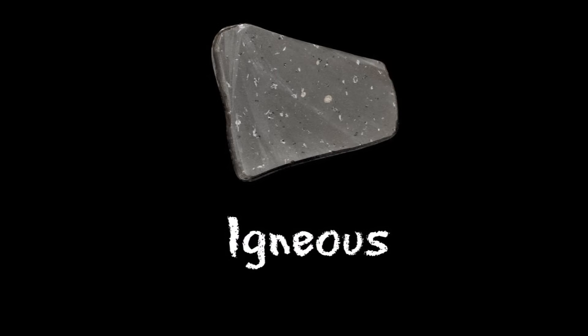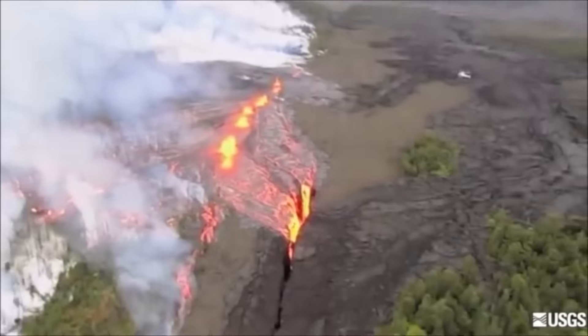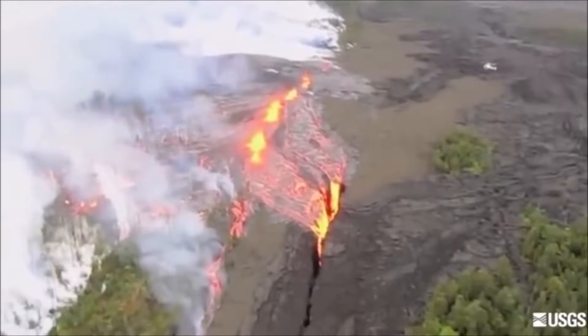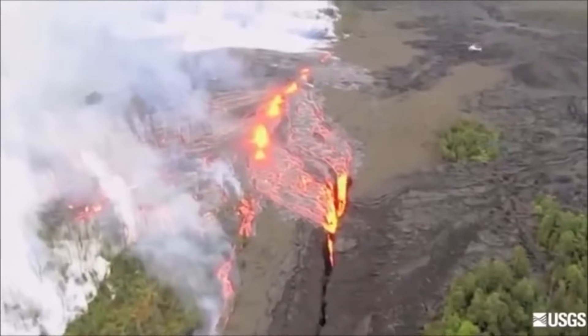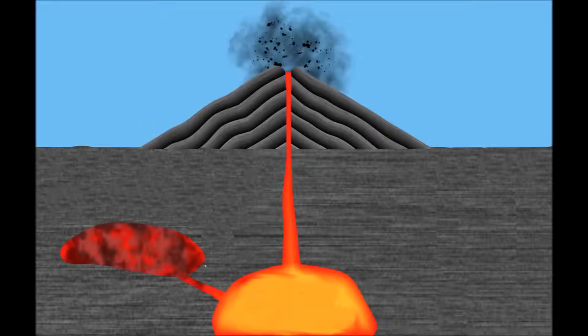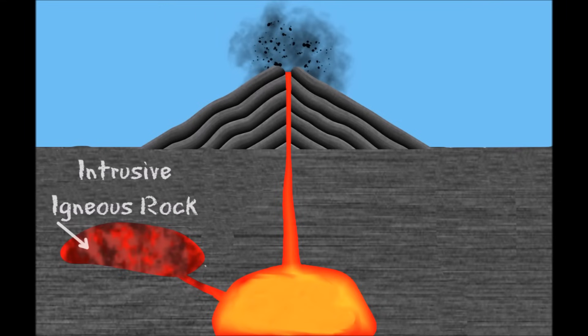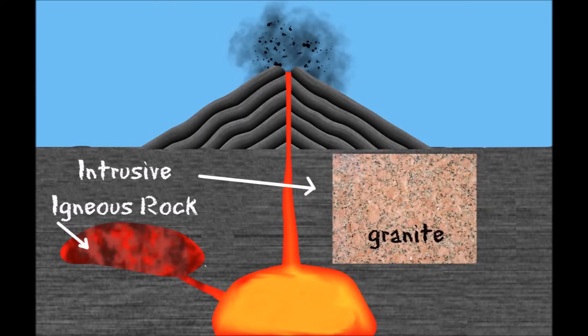Igneous is a word that means fiery. Igneous rock is formed when magma or lava cools. Sometimes magma cools slowly underneath the Earth's surface. This forms intrusive igneous rock, like granite.